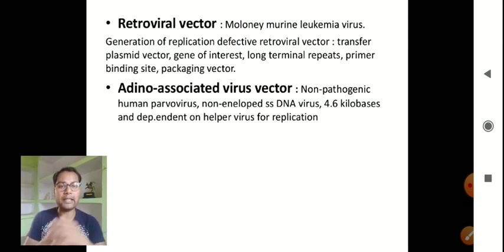Adeno-associated virus vector: these are non-pathogenic human parvovirus, non-enveloped single-stranded DNA virus, 4.6 kilobases, and dependent on helper virus for replication.